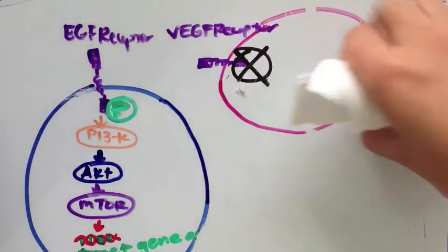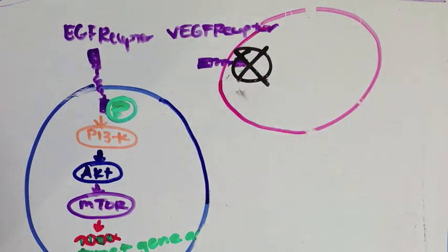Imatinib, nilotinib, and dasatinib are also VEGF tyrosine kinase inhibitors used in the treatment of Philadelphia chromosome positive chronic myeloid leukemia.